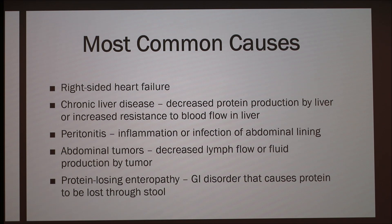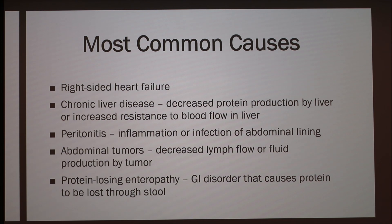Peritonitis, which is the inflammation or infection of the abdominal lining by things such as bacteria. Abdominal tumors, which cause decreased lymph flow or fluid production by the tumor. And then protein-losing enteropathy, which is a GI disorder that causes protein to be lost through stool, so the low blood protein levels lead to the ascites.